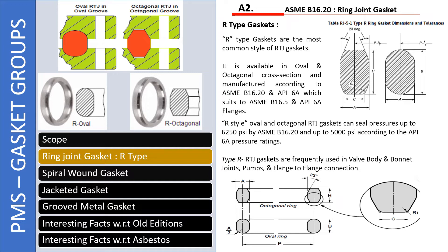We need to understand how high pressures these gaskets can take. RTJ gaskets and RTJ joints will always be there in high pressure ratings — 1500 and 2500 type pressure rating. The pressure inside the joints will be very high, in the range of 6,250 PSI. So these gaskets are designed for that. If the pressure for a particular project and service is in that range, then we can go for oval and octagonal gaskets. These gaskets are mostly used for valve bodies and bonnets, pumps, and flange-to-flange connections.